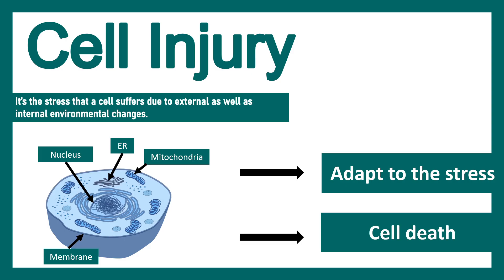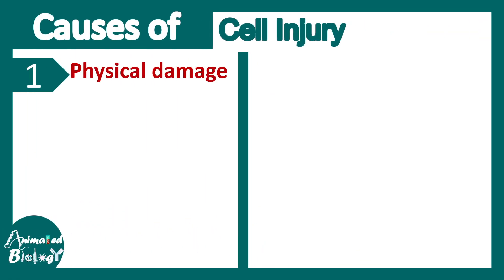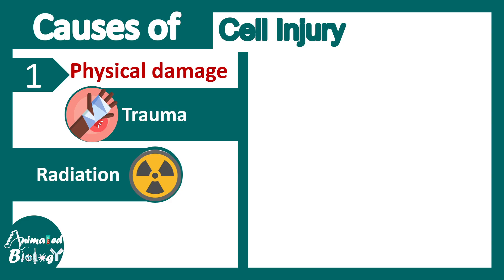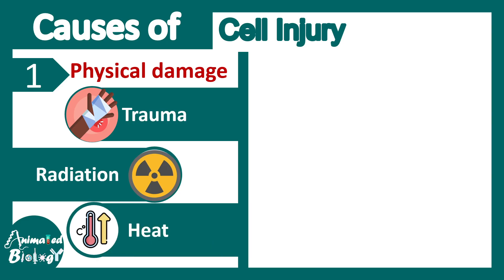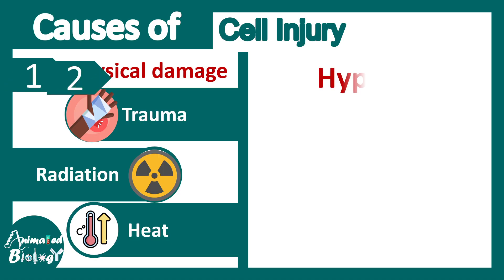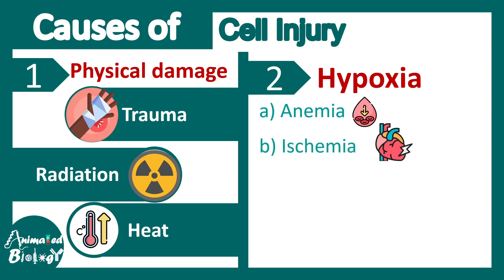We'll talk about one such stress today — that is hypoxia. There could be physical damage to the cell like trauma, radiation, or heat response, but also there could be lack of oxygen leading to hypoxia. This is a serious type of damage. Hypoxia can occur when there is anemia, for example less blood cells, so enough oxygen doesn't reach every tissue of your body.